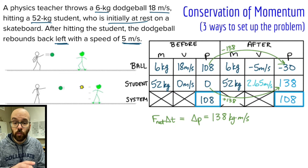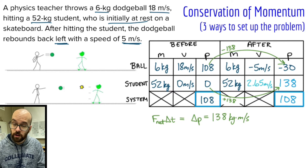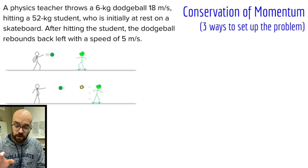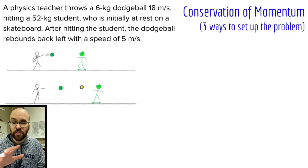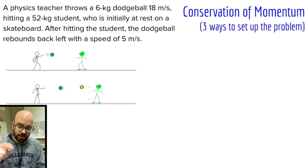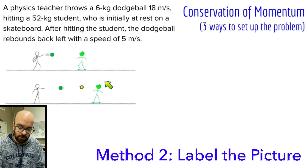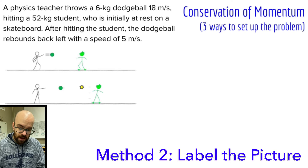That's one way to set up a problem like this. Let's look at another way that a lot of students prefer. I'm going to go through the same problem, but this time instead of creating a table, I'm just going to label things directly on the picture. So I have a before picture and an after picture.